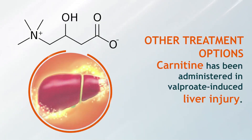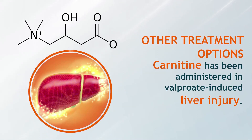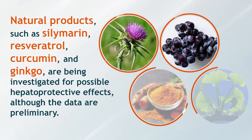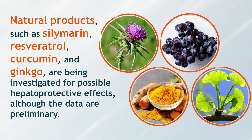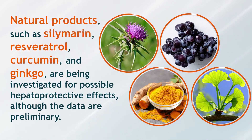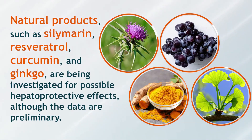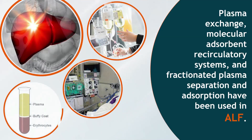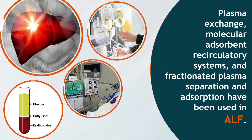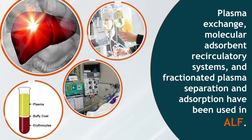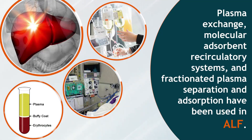Other treatment options. Carnitine has been administered in valproate-induced liver injury. Natural products such as silymarine, resveratrol, curcumin and ginkgo are being investigated for possible hepatoprotective effects, although the data are preliminary. Plasma exchange, molecular absorbent recirculatory systems and fractionated plasma separation and absorption have been used in ALF.